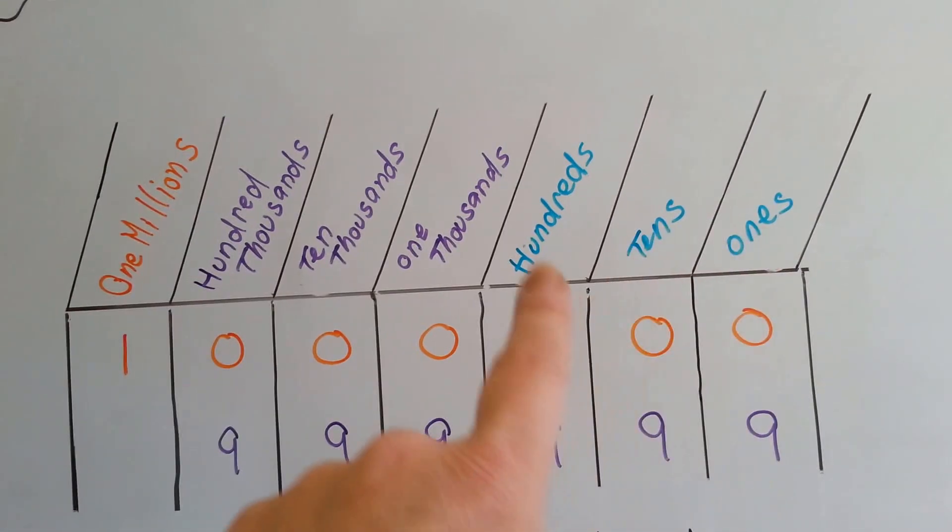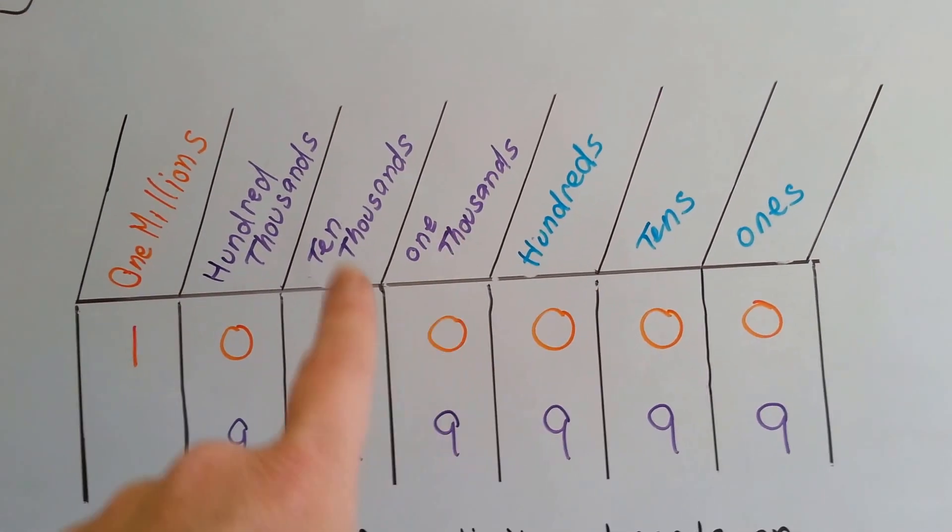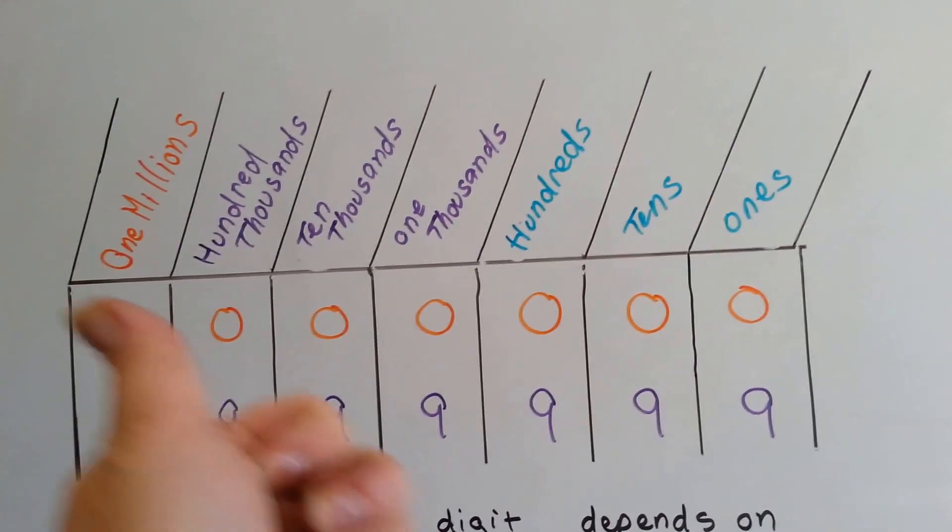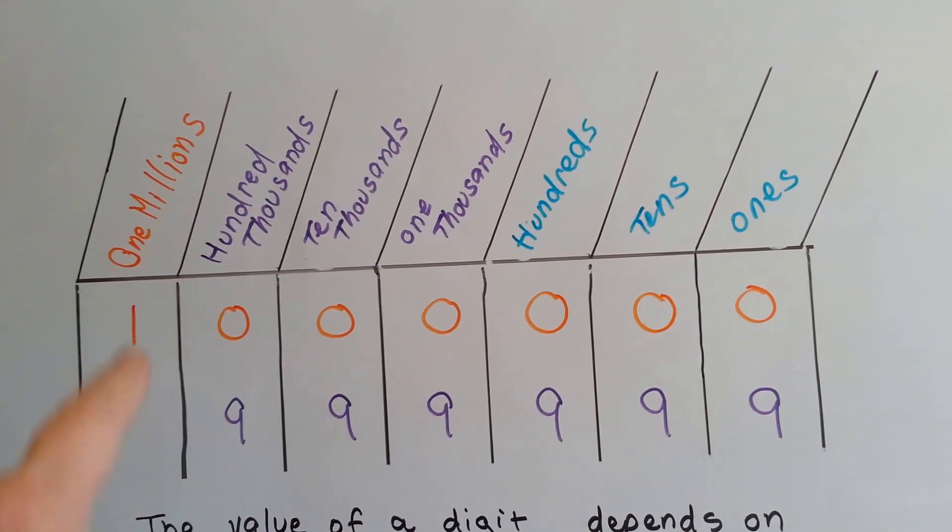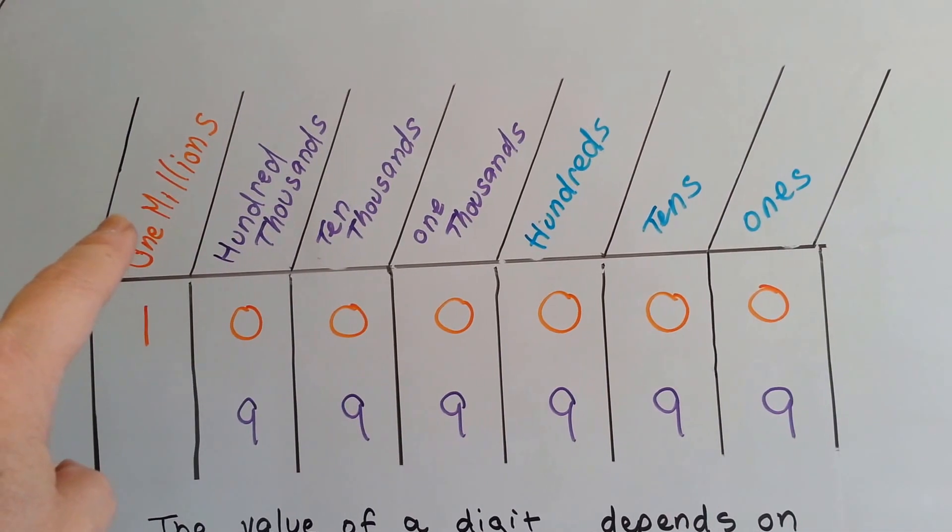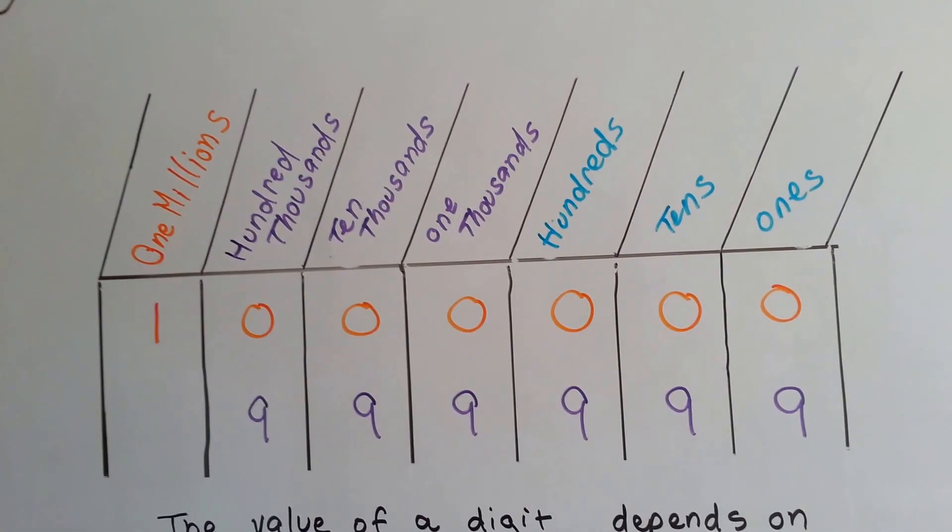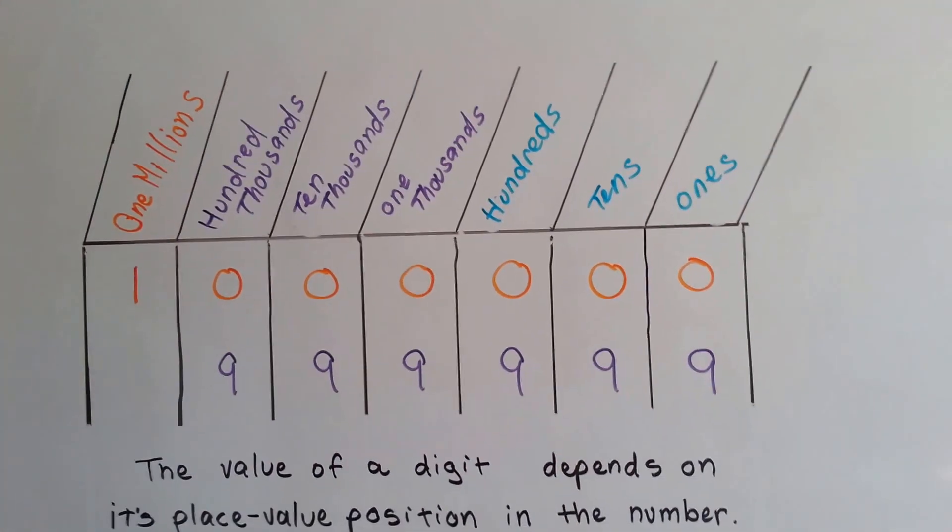Just like there's ones, tens, and hundreds here, we have ones, tens, and hundreds here. And it does that for every place value that we go to the left. So here's the one millions. Of course, there would be ten millions and hundreds millions after it. But we're stopping at one millions here for fourth grade.